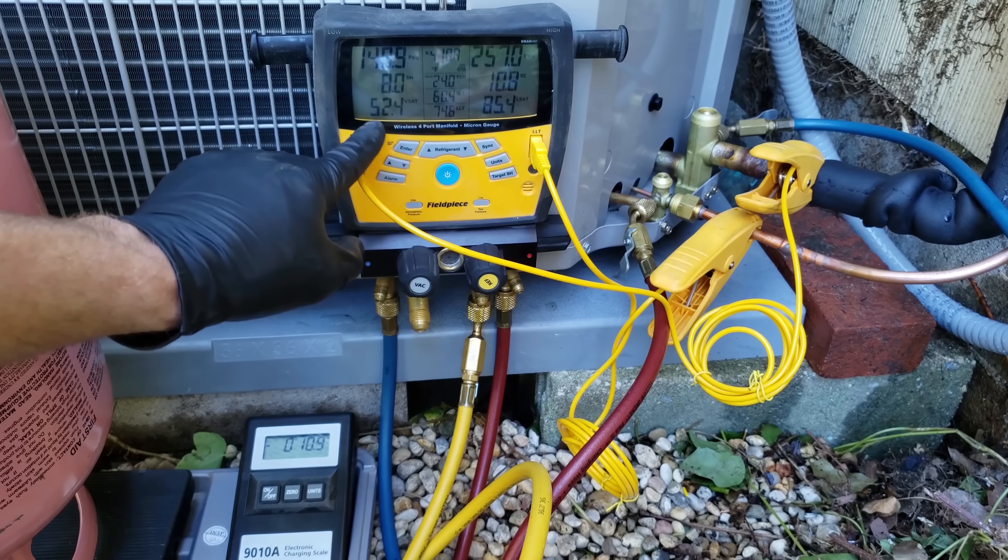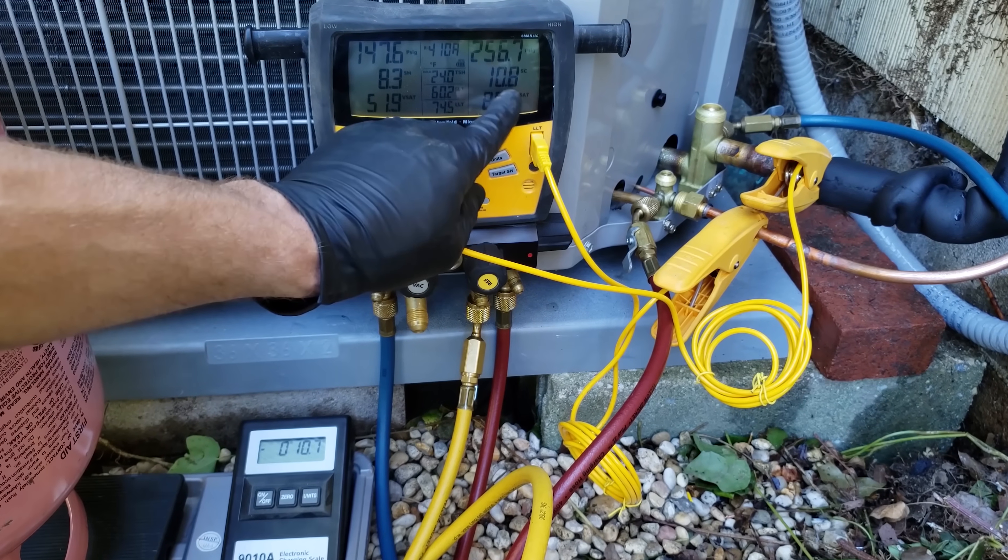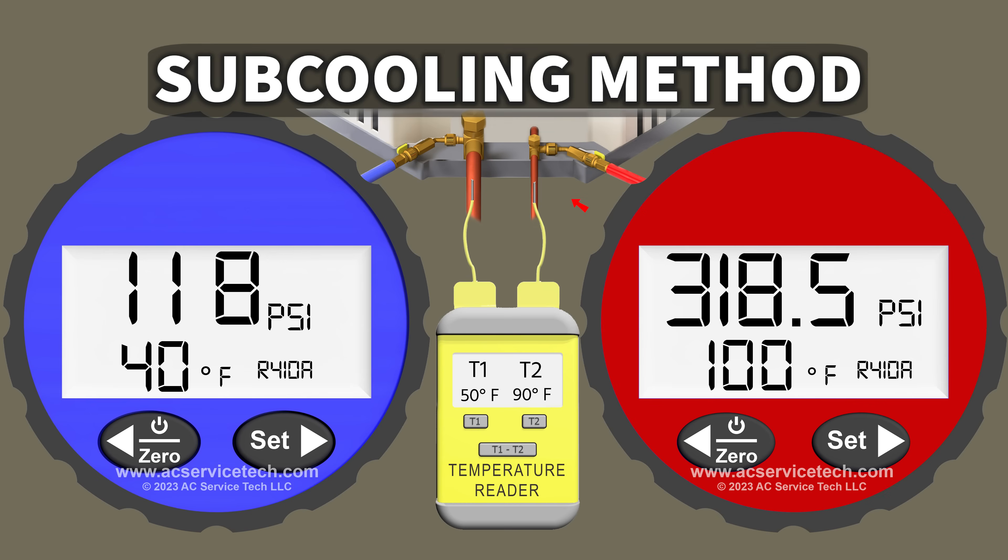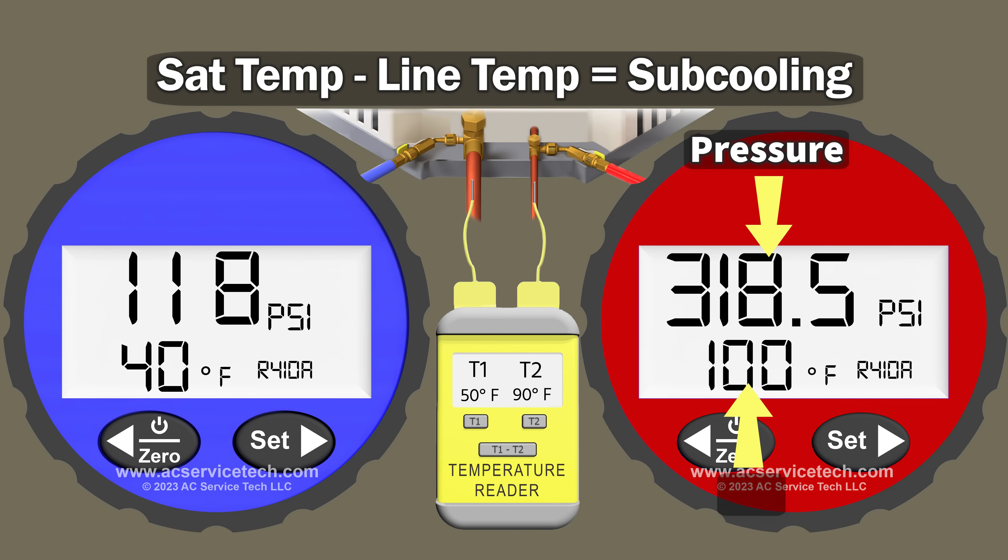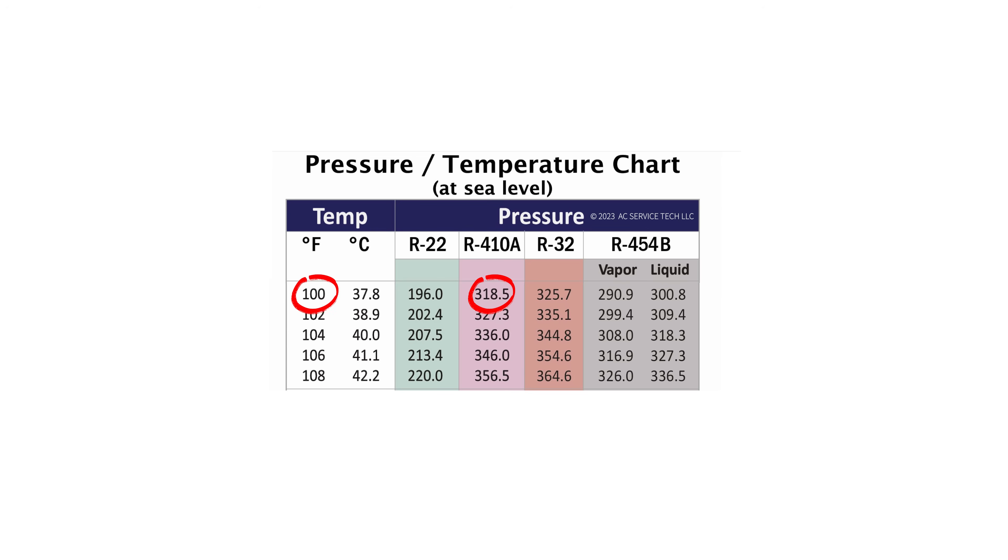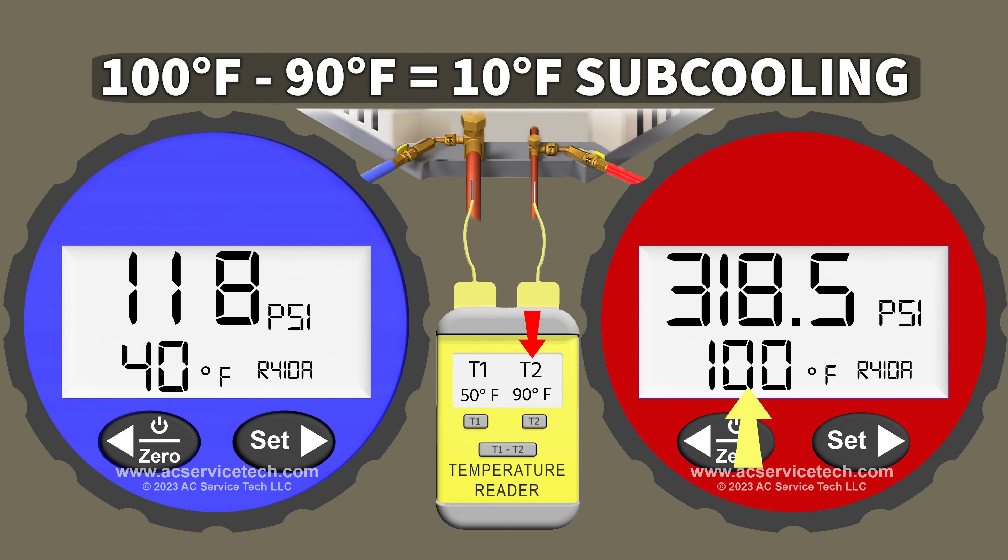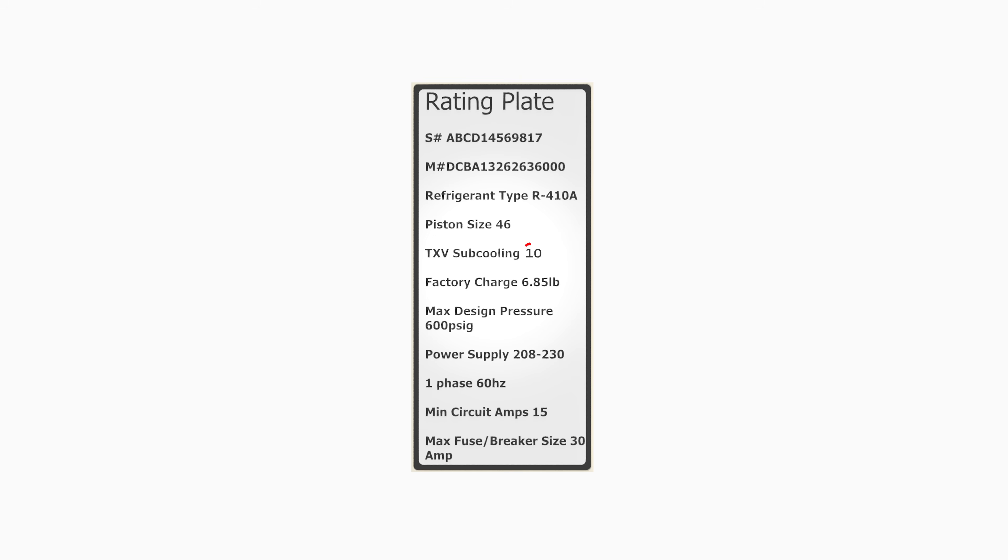After that, you're going to turn the system on and check the system's refrigerant charge with the subcooling method. That's on the small liquid line, and you measure the saturated temperature. You measure the pressure on the liquid line, convert it to saturated temperature, and you take that minus the line temperature. So if this was 100 degrees saturated temperature in the middle of the outdoor coil, and on the line it was 90 degrees, then you have 10 degrees of subcooling, and the refrigerant charge will be correct.